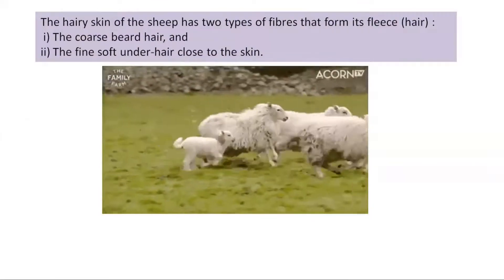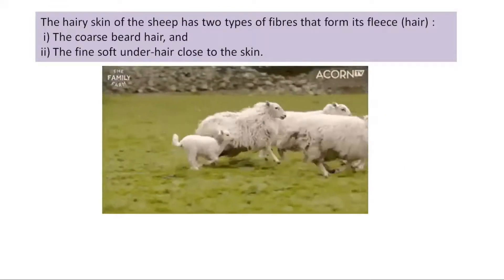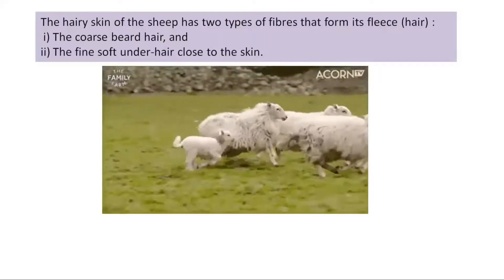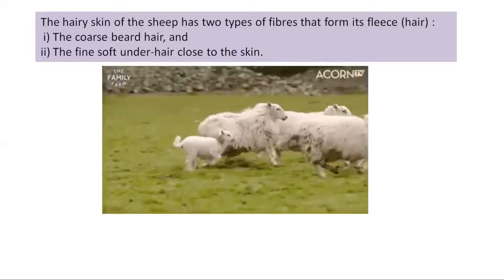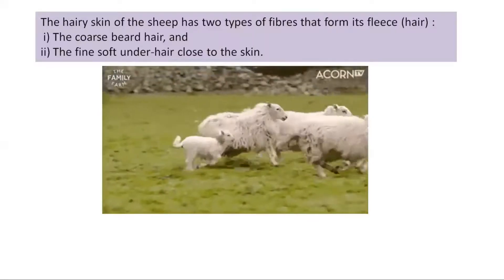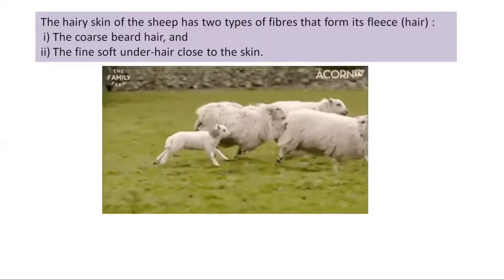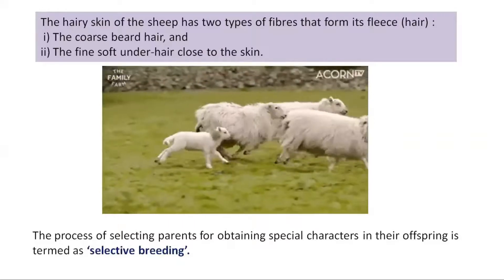Sheep have two types of hair on their body: the first is coarse beard hair — the outer rough hair — and the second is fine, soft under-hair which is close to their skin. Only these fine hairs provide the fibers for making wool. Some breeds of sheep possess only fine under-hair, which is achieved through selective breeding — the process of selecting parents to obtain special characters in their offspring.